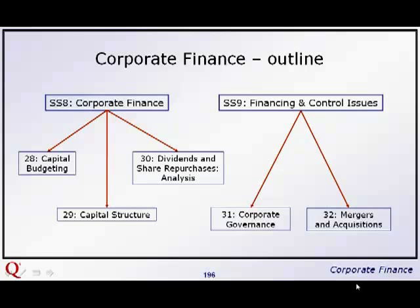We then go into dividends and share repurchases. We did a bit of this chapter at level 1, so we look at dividend policy — how companies choose what dividends to pay, a little bit about tax on that, and then how different people may choose different types of companies depending on the dividend.